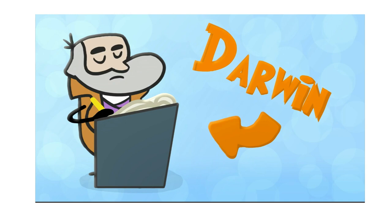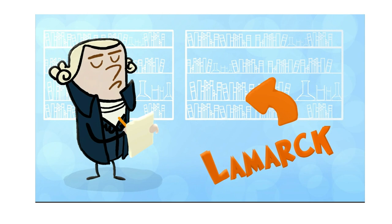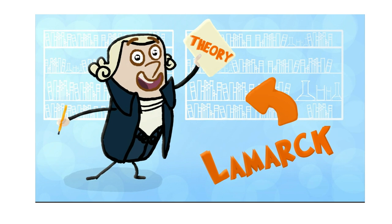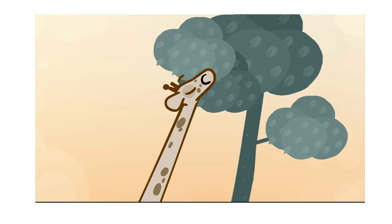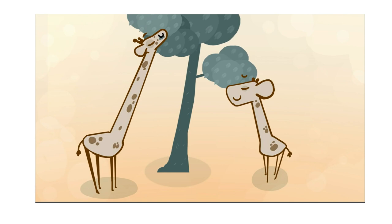Almost 60 years before Darwin published his book, Jean-Baptiste Lamarck proposed that creatures evolve by developing certain traits over their lifetimes, and then passing those on to their offspring. For example, he thought that because giraffes spent their lives stretching to reach leaves on higher branches, their children would be born with longer necks. But we know now that's not how genetic inheritance works.